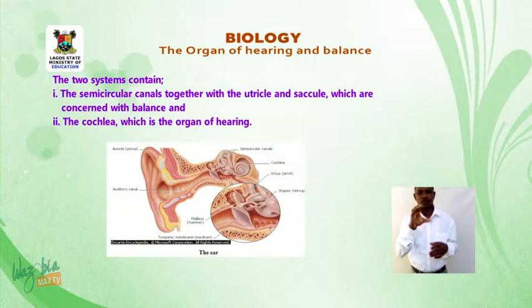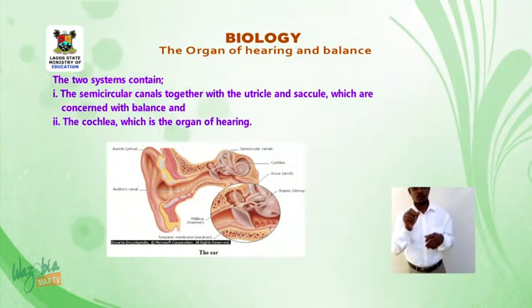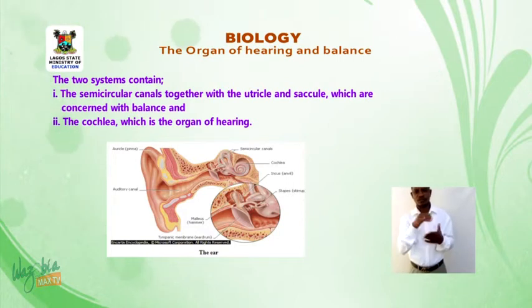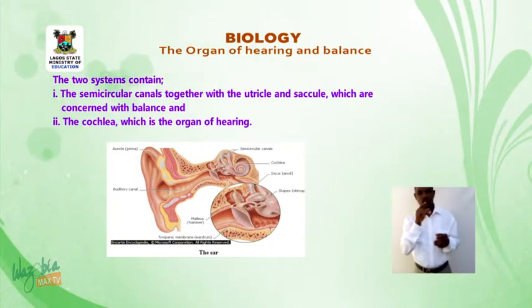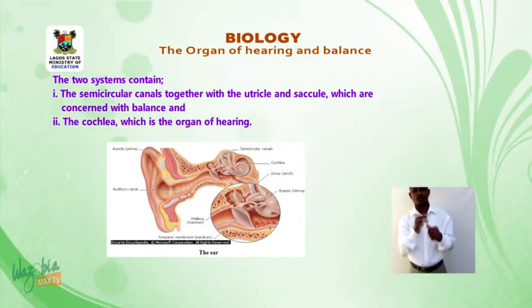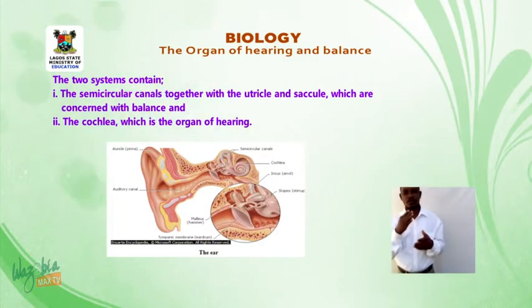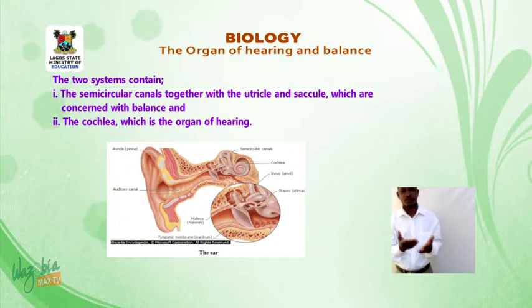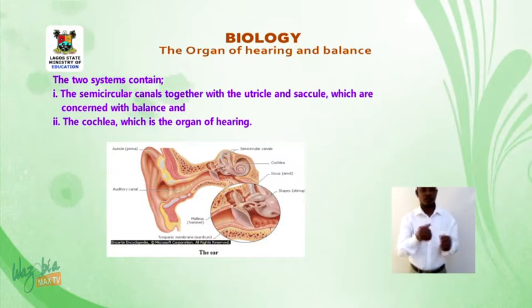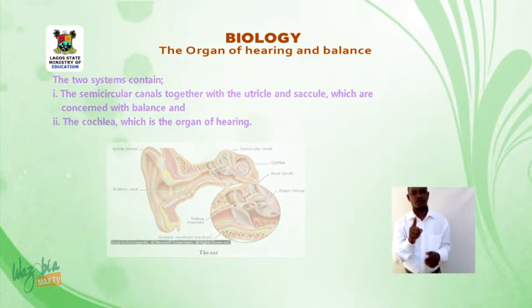The two systems contain: one, the cochlea, which is the organ of hearing; and two, the semicircular canals, together with the utricle and saccule, which are concerned with balance.